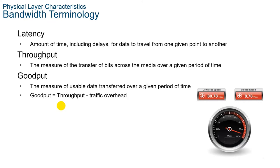The third measurement is goodput. Goodput is the measure of usable data transferred over a given period of time. Goodput equals throughput minus traffic overhead for establishing sessions, acknowledgements, encapsulation, and retransmitted bits. Goodput is always lower than throughput, which is generally lower than bandwidth.